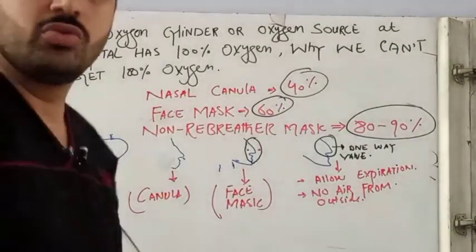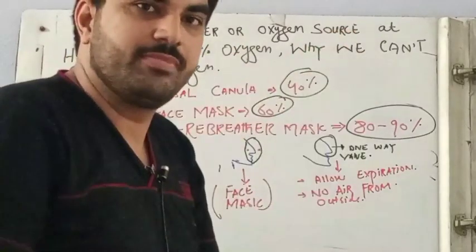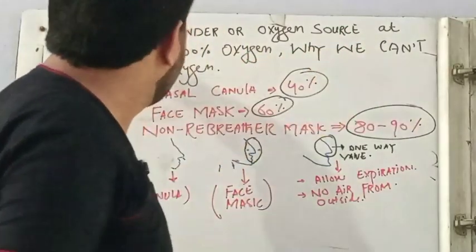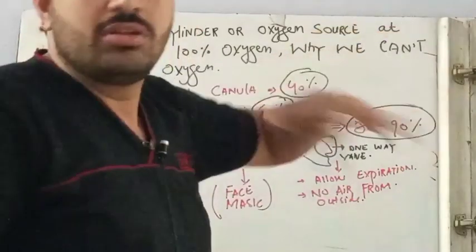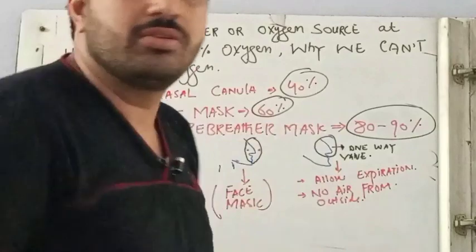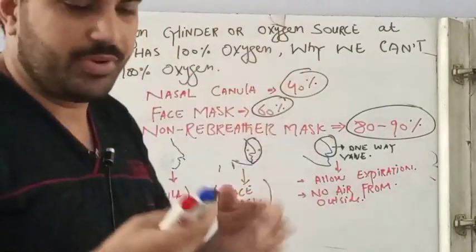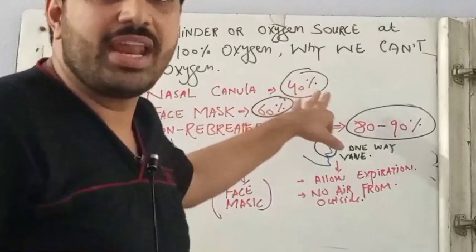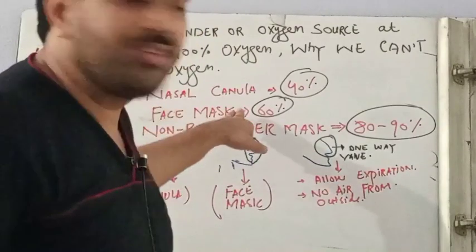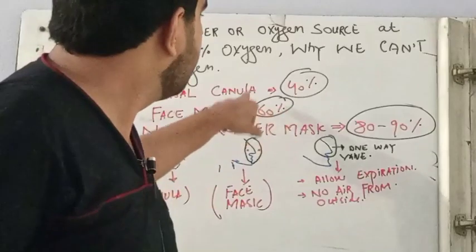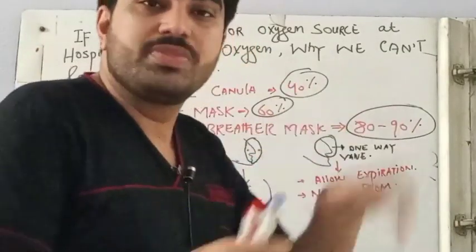Today we are going to talk about a very important topic: if the oxygen cylinder or oxygen source at the hospital has 100% oxygen, why can't we get 100% oxygen? The nasal cannula gives an FiO2 of 40%, meaning the air we are inhaling has only 40% oxygen, with the rest being nitrogen and other gases. With a face mask there is 60%, and previously I talked about how with the non-rebreather mask it is 80 to 90%.